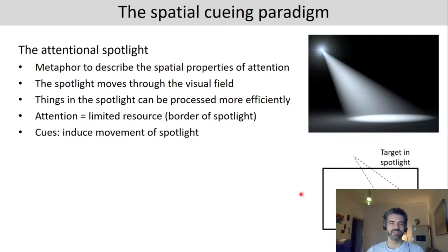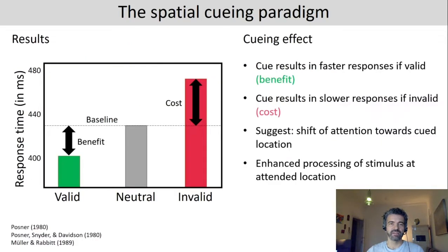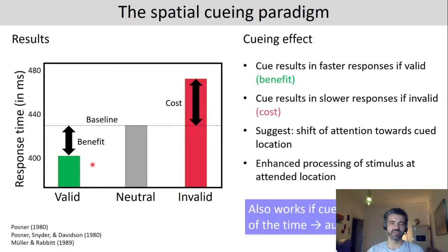The properties of attention highlighted by this metaphor are that attention is a limited resource — we can't attend everything at the same time. The border of the spotlight indicates how many resources we can invest. The cues that induce movement of the spotlight explain these results: if the spotlight is at the wrong location, there is a cost because you need to re-shift it; if it's already at the right location in valid trials, you benefit.